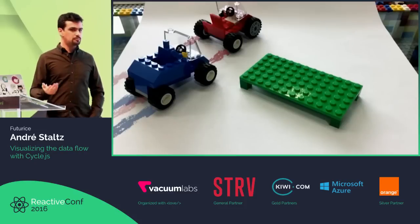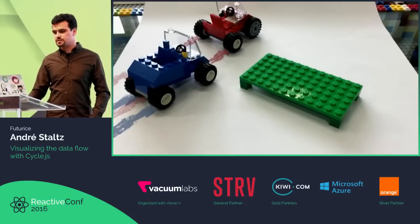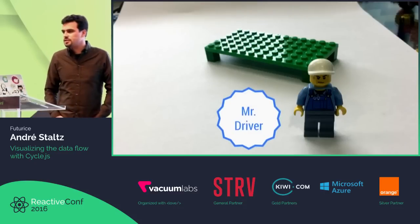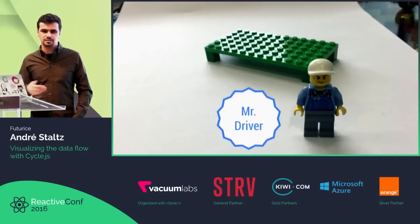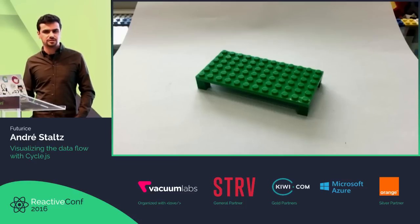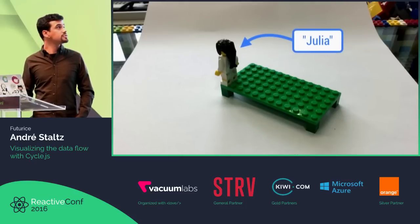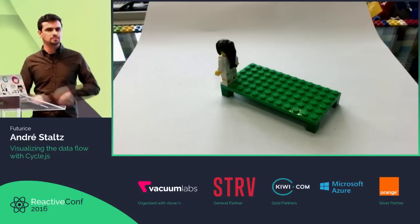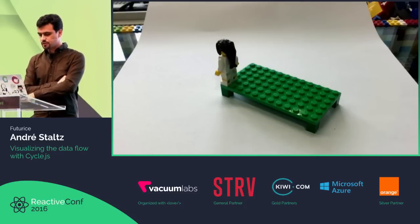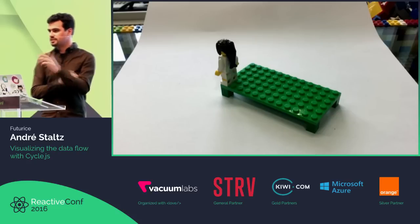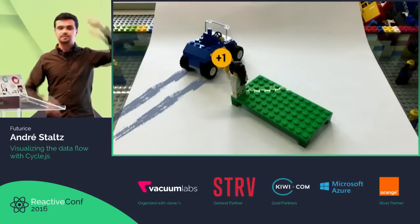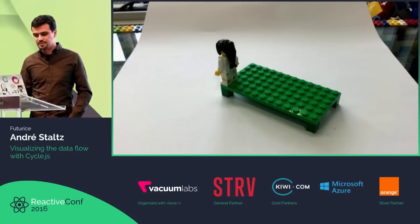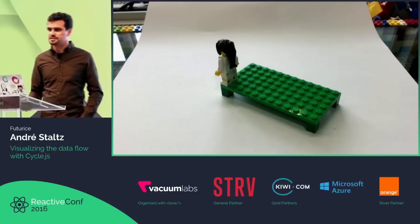We have Mr. Driver in the outside world — he knows how to drive those cars and do other stuff. On stage we have Julia — she just likes to observe the outside world. Whenever she sees a blue car, she lifts a sign that says plus one. She doesn't need to go to the restrooms, doesn't need to sleep — just stands there.